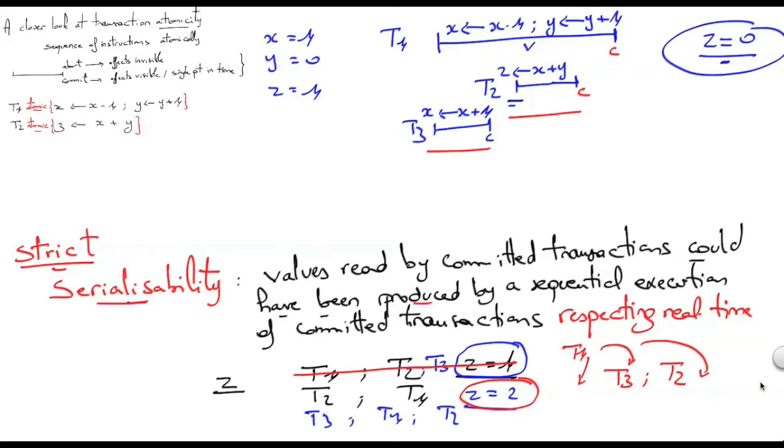In both cases, whether we consider serializability or strict serializability, the property insured, the guarantee provided, has to do with values read by committed transactions. If, for example, T2 is not committed but aborted, we don't really care. Serializability and strict serializability don't really care what the value would be read here. So it could be that z equals 0.